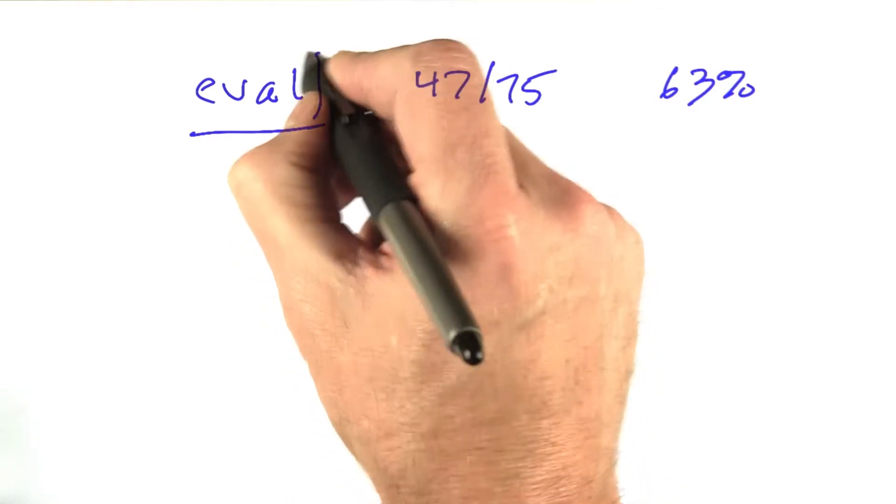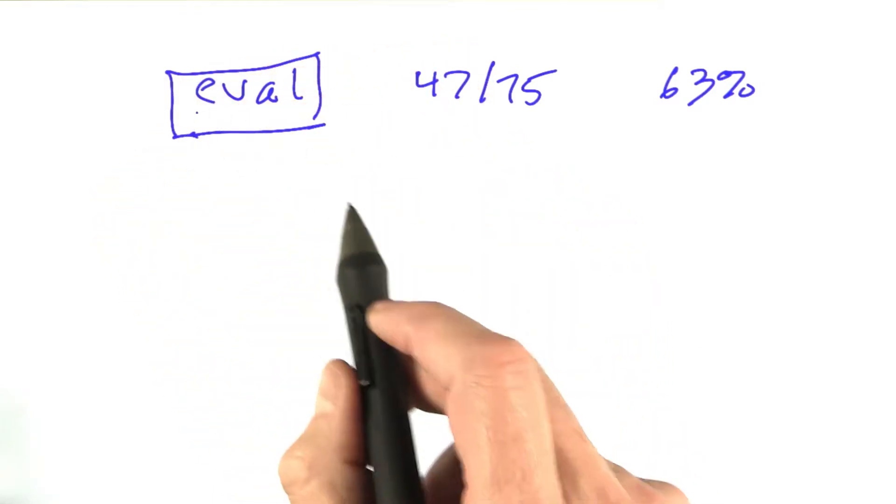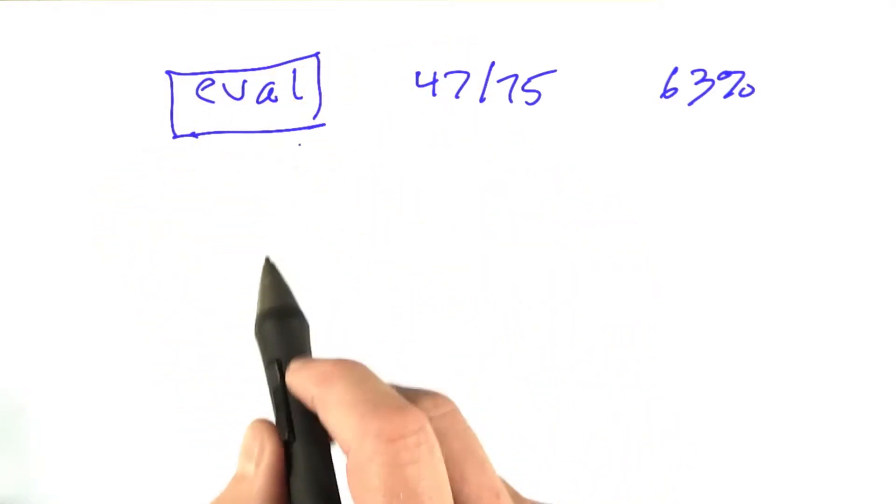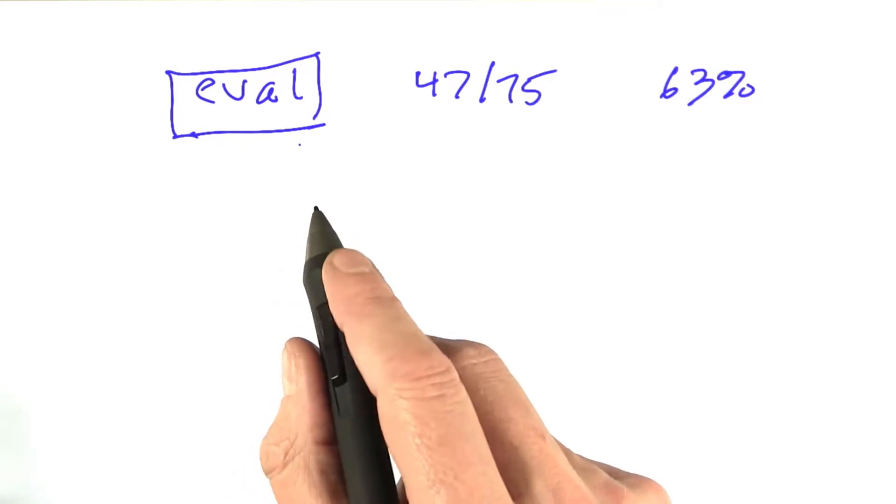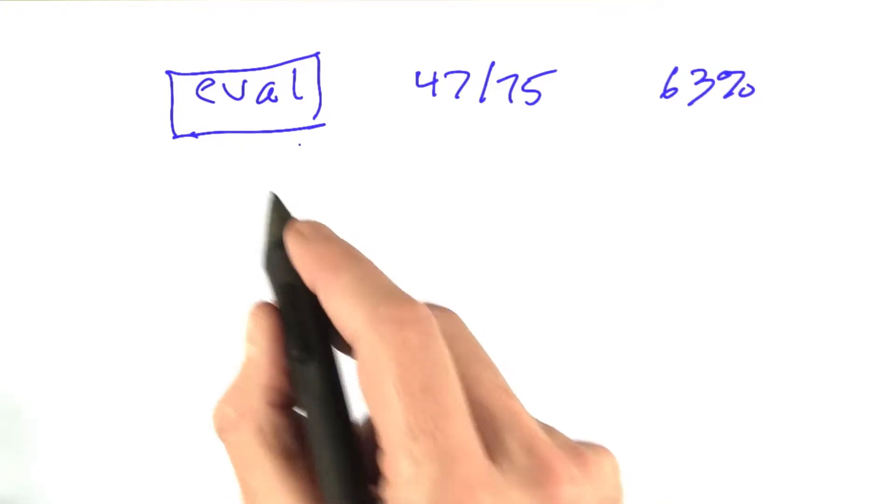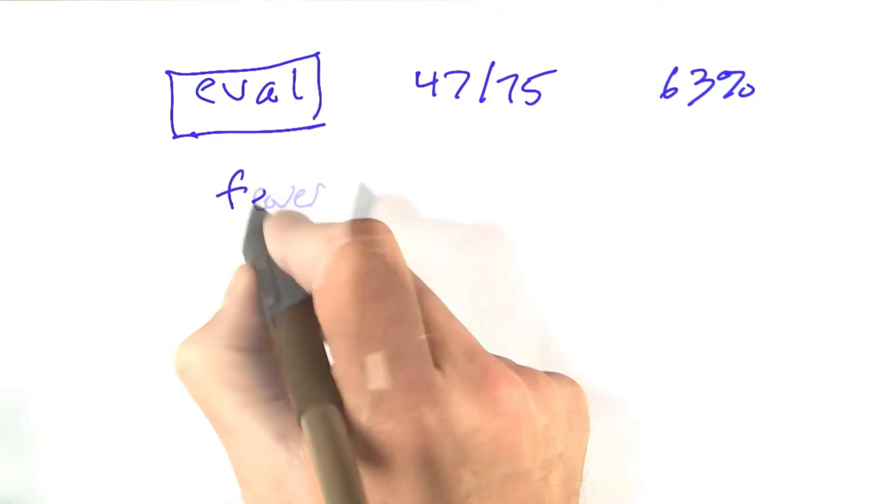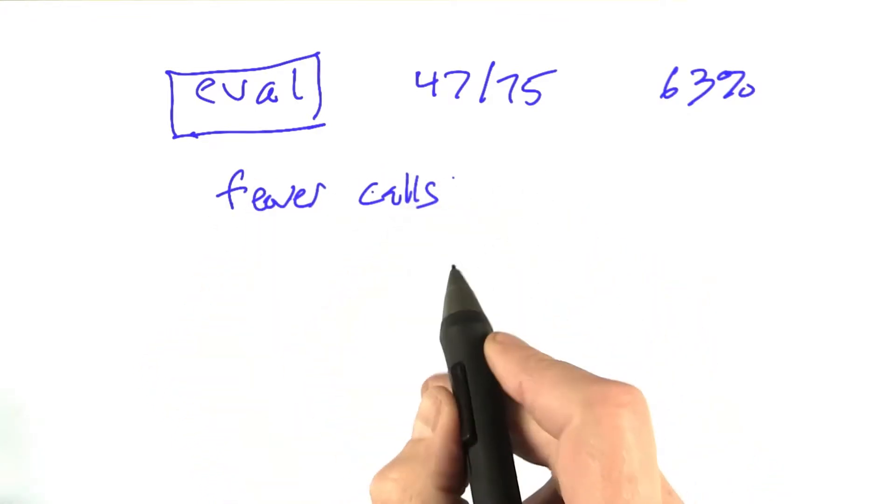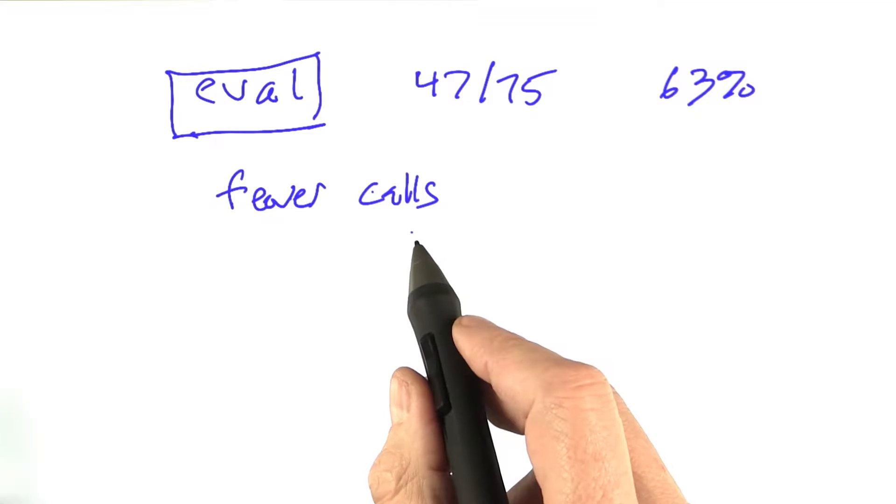The problem is that eval is a built-in function, so we can't go editing eval to try to make it faster. But if we can't touch eval itself, the only choices we have are we could make fewer calls to eval. We call it fewer times, we'll spend less time in it.